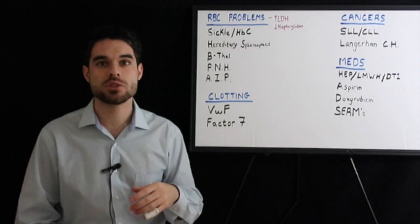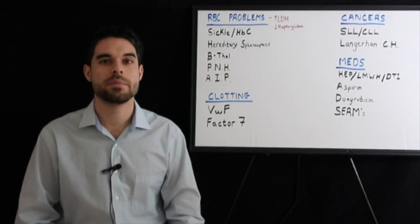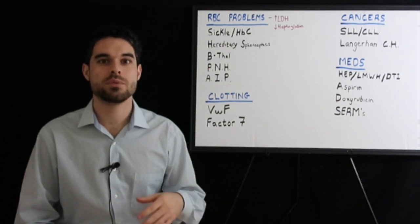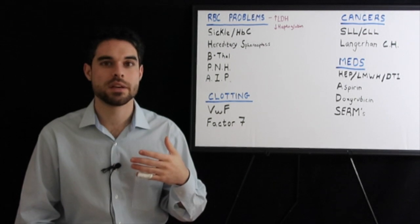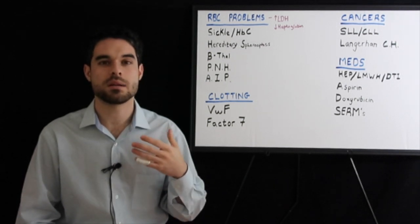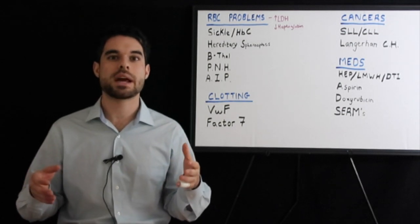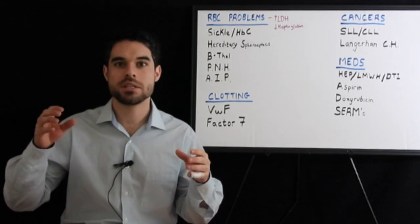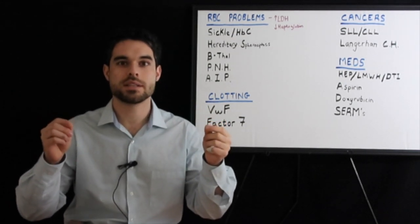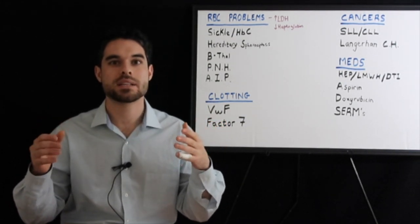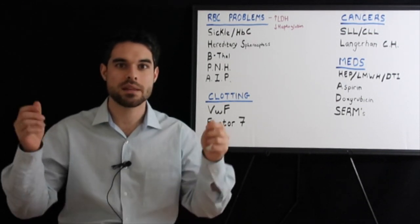Moving on to clotting disorders, von Willebrand factor deficiency is very high yield. In this condition, you don't have von Willebrand factor, so you'll present with a woman who has heavy periods or someone with nosebleeds. The problem is that von Willebrand factor naturally forms a bridge between the platelets and the collagen.